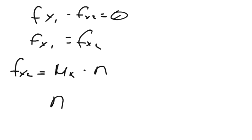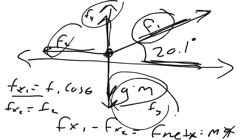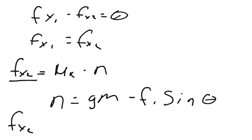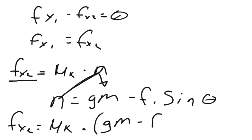The normal force equals gravity times mass minus any other upward force — in this case, F1 sine theta. We can now rewrite F of x2 as: F of x2 equals the coefficient of kinetic friction times the quantity (gravity times mass minus F1 sine theta).